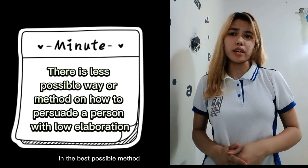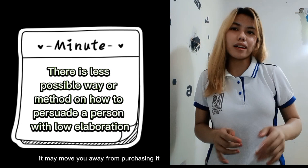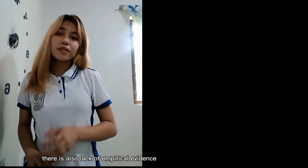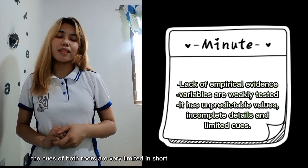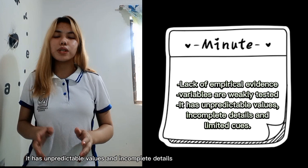I also realize there is no hint of how to best persuade a low elaborator. Going back to our earlier example, seeing a favorite celebrity may pull you toward purchasing, but if you dislike the music or the theme of the ad, it may push you away from purchasing. This indicates that even if the peripheral route of persuasion is taken, it cannot be guaranteed it will persuade the target audience. There is also a lack of empirical evidence and the variables used are weakly tested. The cues of both routes are very limited — in short, it has unpredictable values and incomplete details which leave critical questions unexplained.